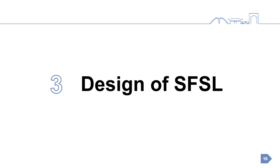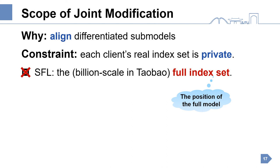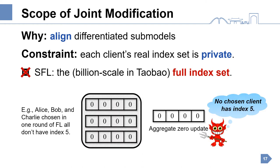Let's look at the design of SFSL. We first determine the scope of joint modification, thus aligning submodels and making secure aggregation effective. The key constraint is that each client's real index set is private. The baseline SFSL truly uses the full index set, that is the position of the full model. In Taobao, the full index set is at the billion scale. To narrow down the scope, we observe that if all the clients chosen in one round do not have some index, they upload zero updates through secure aggregation. From the aggregated zero update, the untrusted cloud server can still infer that no chosen client has the index.